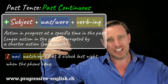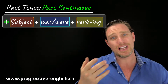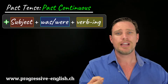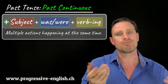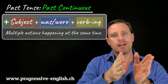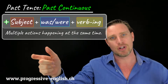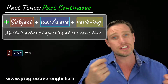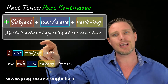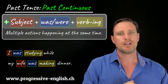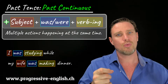There's a past continuous action and during that action a shorter action happens. The last way we use past continuous is to show multiple actions happening at the same time. There isn't one specific long action and then a short action — there are two actions happening at roughly the same time. For example: I was studying while my wife was making dinner. Both actions took around the same length of time, so we use the past continuous for both.